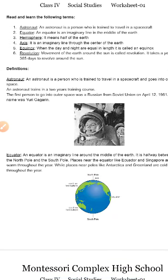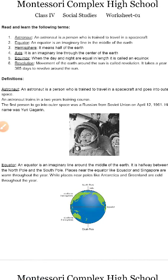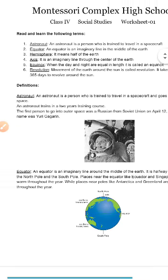An astronaut goes outside of the earth and into space. Space refers to all the area outside of the earth. An astronaut is trained to go outside the earth and into space. An astronaut undergoes a two-year training course, after which they are able to work as an astronaut.